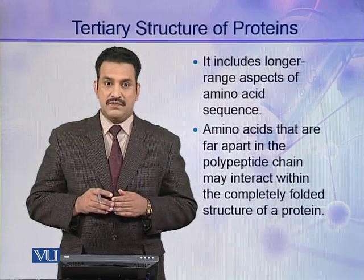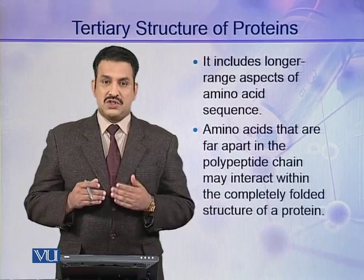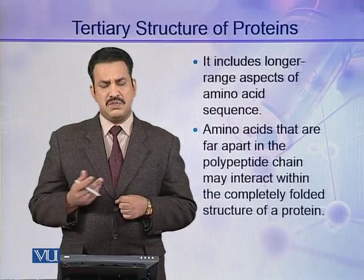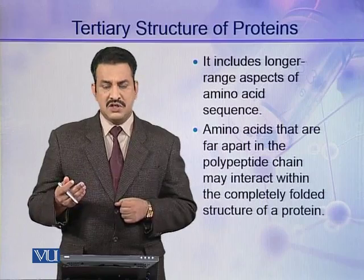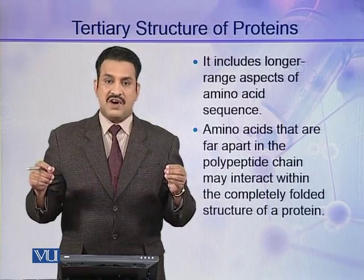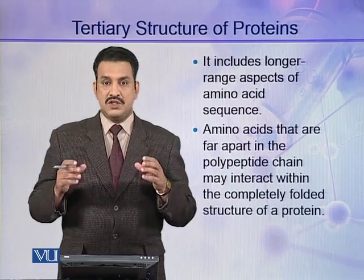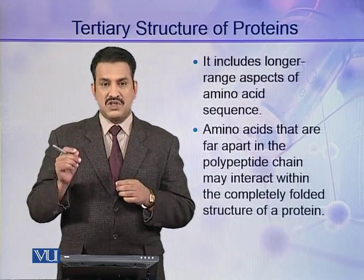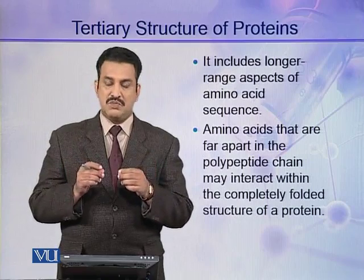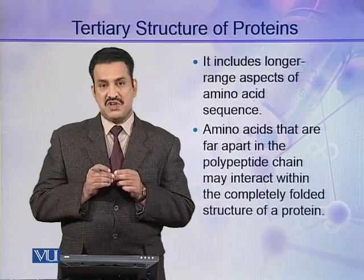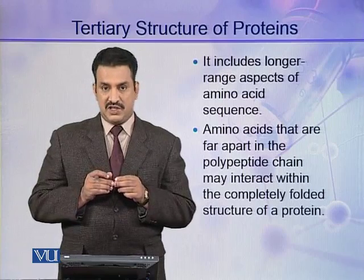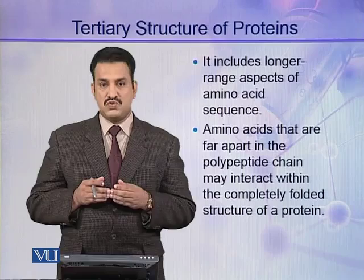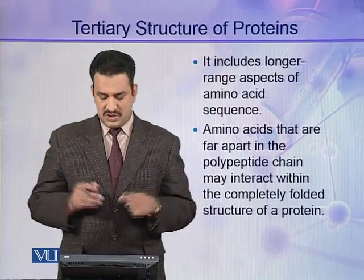For example, if a protein contains a cysteine amino acid at position 5 and a second cysteine amino acid at position 90, they are very far from each other. But when the polypeptide folds into its tertiary structure, cysteine number 90 may come close to cysteine number 5 and they both may interact and form a disulfide linkage. In this way, weak and covalent interactions are made between quite far amino acid residues.